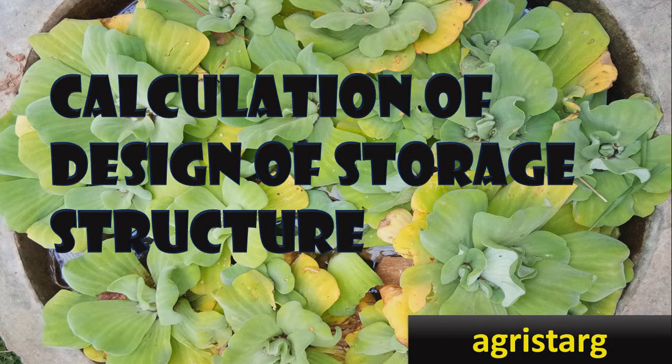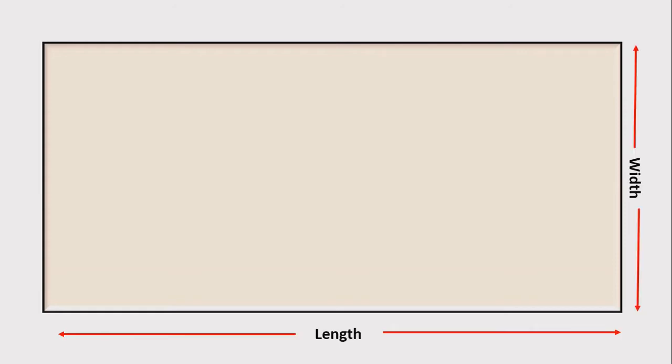First I am going to explain the ideal structures with their measurements, and wherever required we will be assuming some values. Let's assume this is the storage structure which has length and width, where length is greater than or equal to twice the width of the storage structure, and it consists of a damp-proof floor where it is filled with stacks.